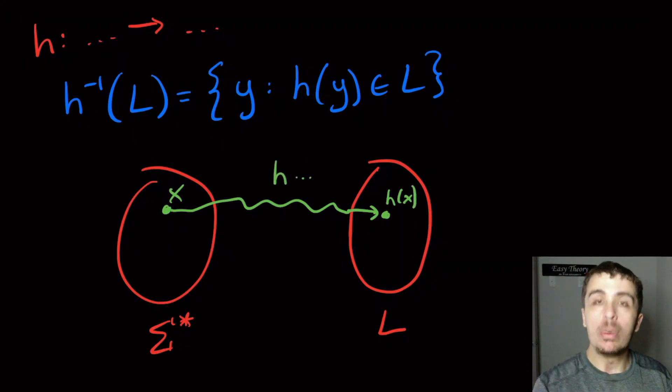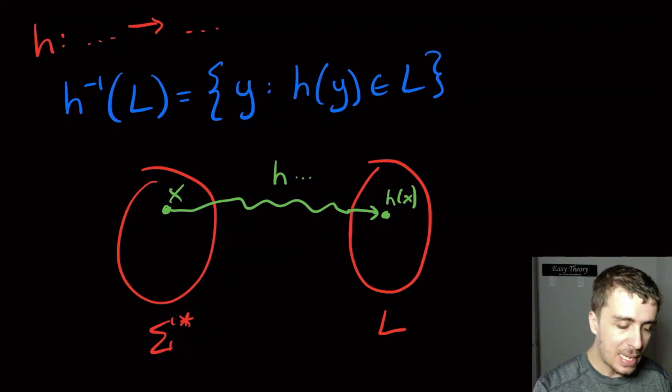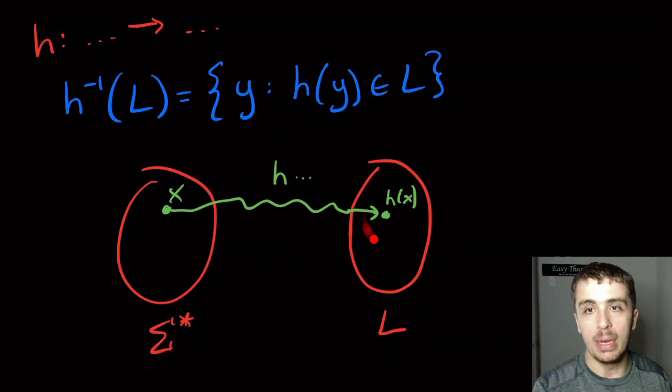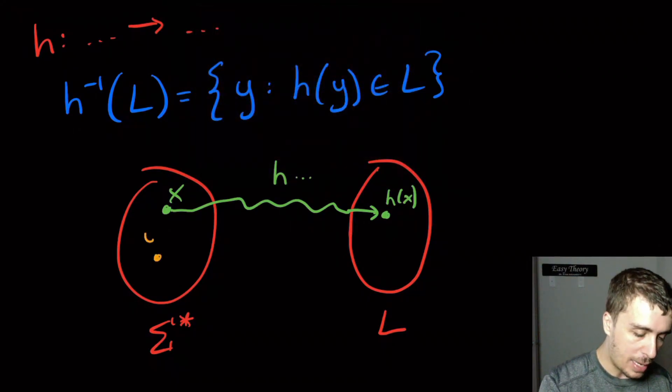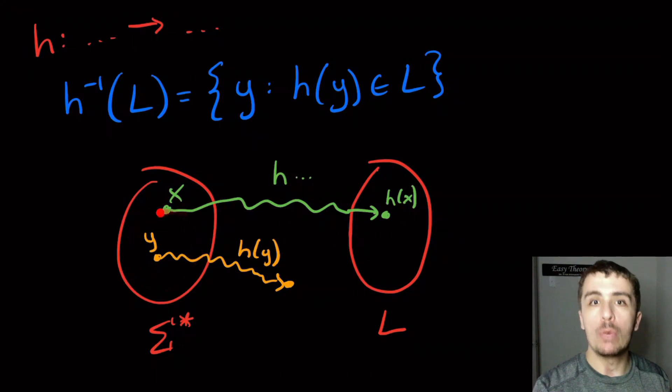And so we're applying H there. And we would want to say yes here, because it's in the inverse homomorphism. It's the strings that applying H to it land in the language here. And suppose that we have some string Y right here, this is the bad guy, that lands over here when we apply H to it. On this particular input Y, we should say no, because applying H to it is not in the language L. So if we have a decider for the language L, then I claim we have a decider for the inverse homomorphism of L. Why?